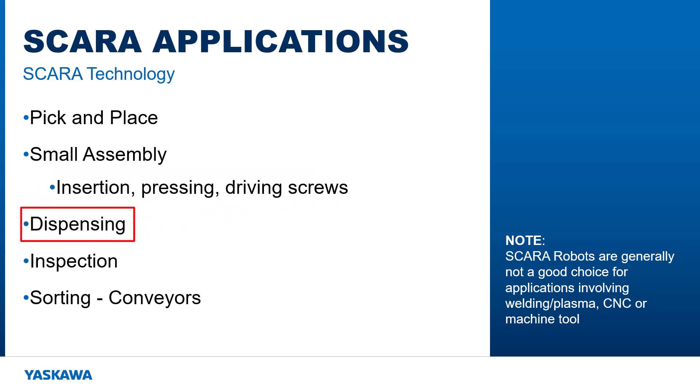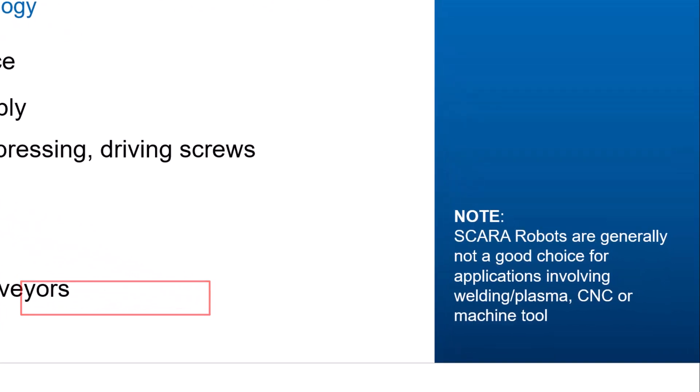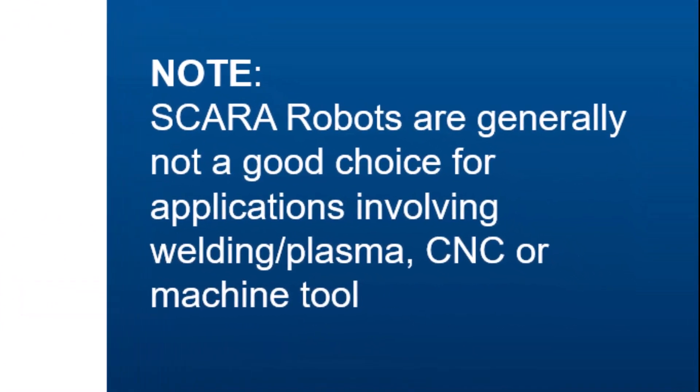Dispensing is another good application for SCARA robots, and they are often used in inspection, sorting, and other processes involving parts moving on conveyors. Note that SCARA robots are generally not a good choice for applications involving welding and plasma due to their limited degrees of freedom, nor do they have the rigidity required for CNC or machine tool applications.